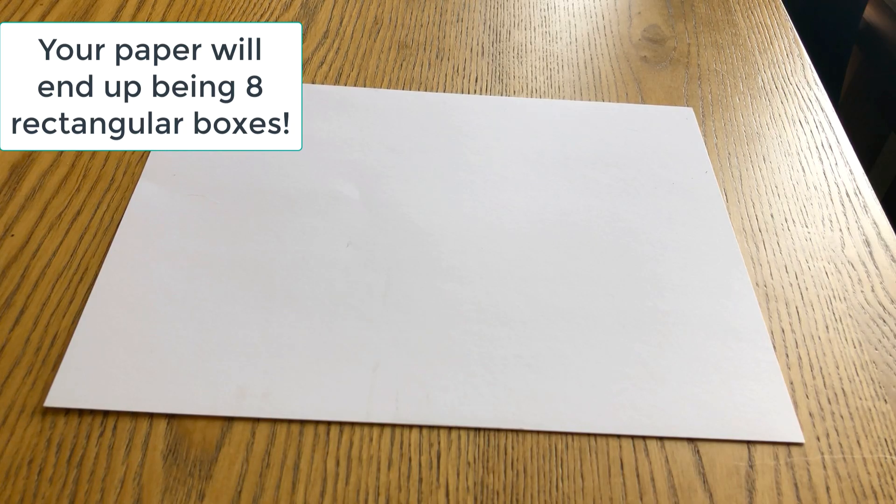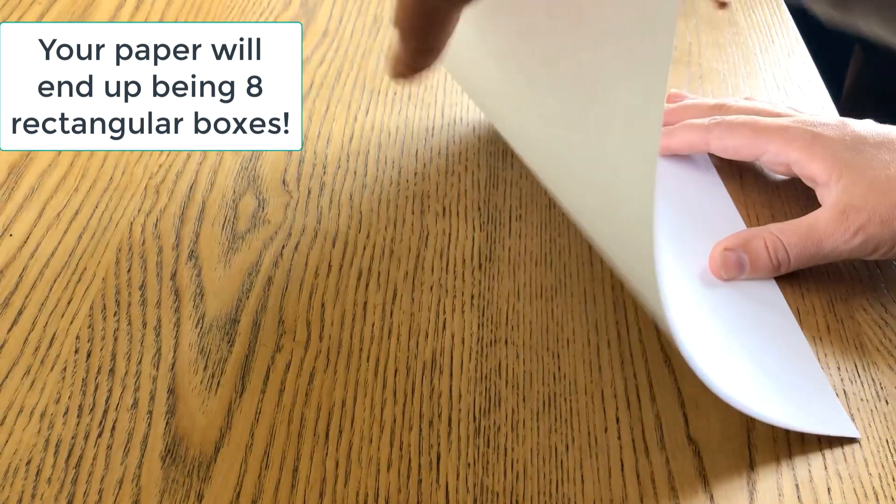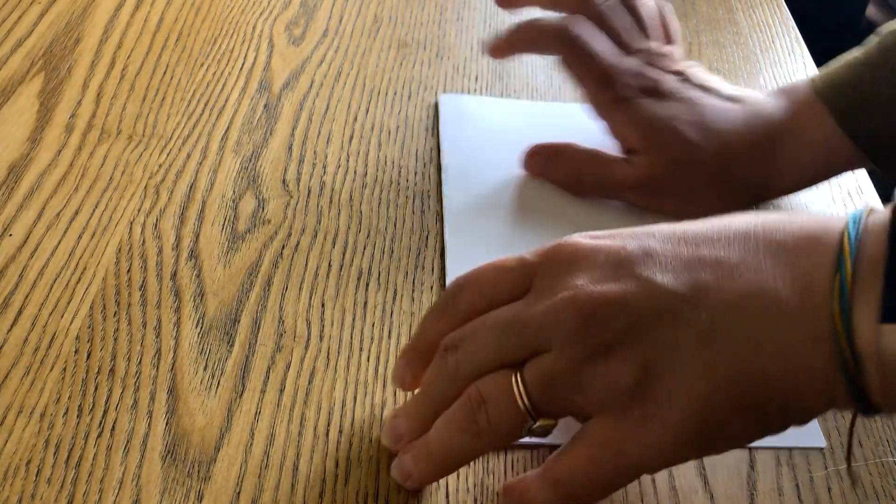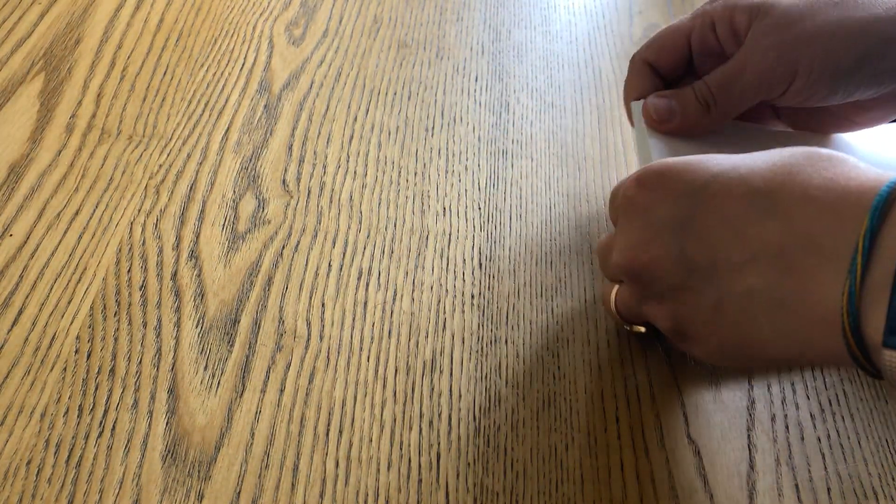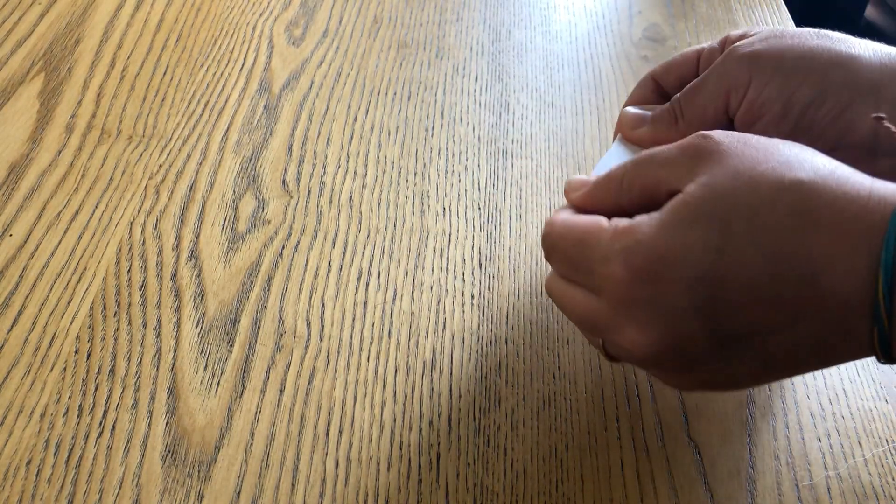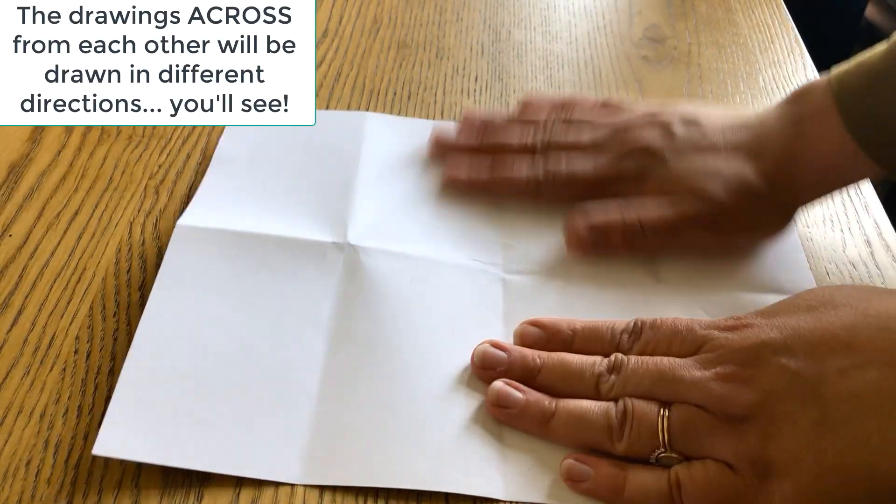Alright guys, the first thing we're going to do is take regular paper and fold it into eighths. So I'm going to fold mine in half. It doesn't matter which half you start with. Fold it in half again, and then once you really crease that down, see your lines? Fold it in half one more time. This should split your paper up into eight even boxes.